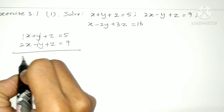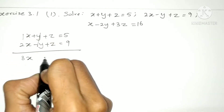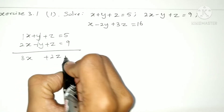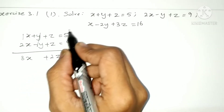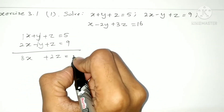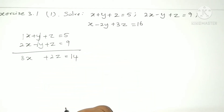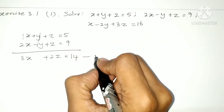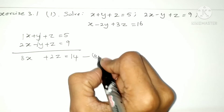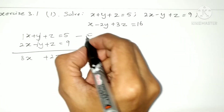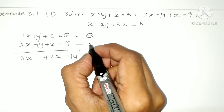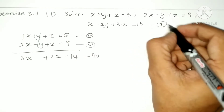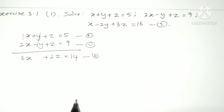So if we add equations 1 and 2, 3x plus 2z is equal to 9 plus 5, which is equal to 14. This is equation 4. This uses equation 1 and equation 2.